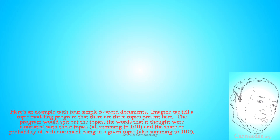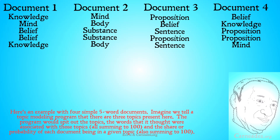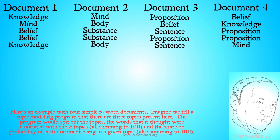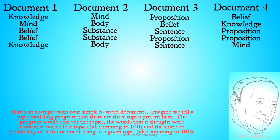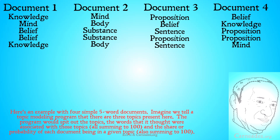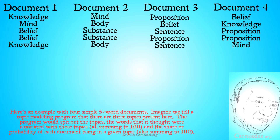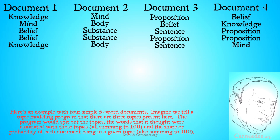Here's an example with four simple five-word documents. Document one: knowledge, mind, belief, belief, knowledge. Document two: mind, body, substance, substance, body. Document three: proposition, belief, sentence, proposition, sentence. Document four: belief, knowledge, proposition, proposition, mind. We input these documents into a topic modeling program with no stop words, since we don't have any 'is', 'and', or 'does'. We also say we think there are three topics present — an epistemology topic, a metaphysics topic, and perhaps a philosophy of language topic as well.